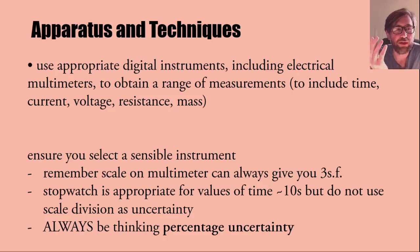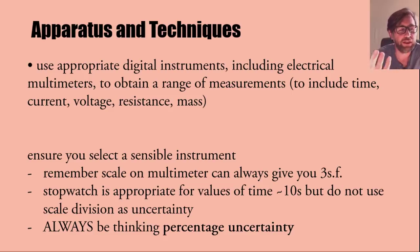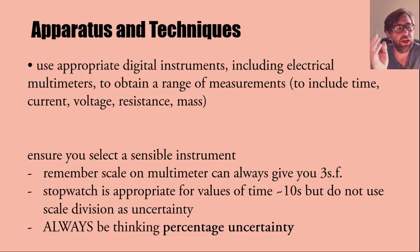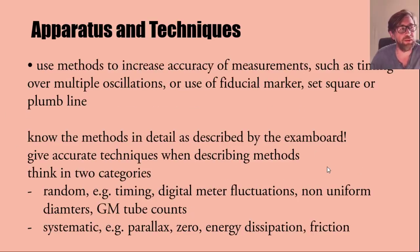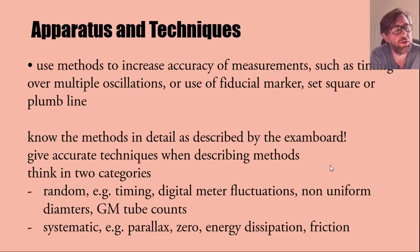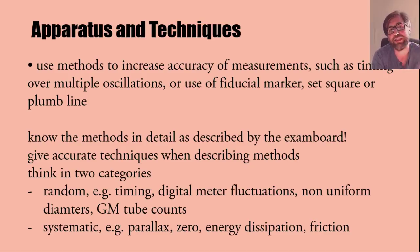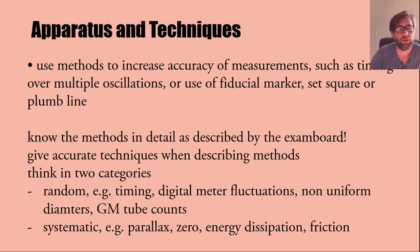A stopwatch is appropriate for times greater than about five to ten seconds, but in that case you wouldn't use the scale division as an uncertainty — always think about percentage uncertainty. Methods to increase accuracy include timing over multiple oscillations, using a fiducial marker, set square, or plumb line. Make sure you know how to do them. For example, you don't just time one full swing of a pendulum — you time 10 and divide by 10 to get the time period.